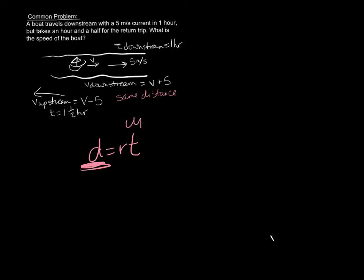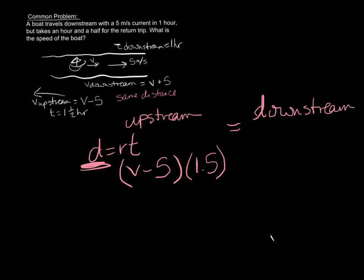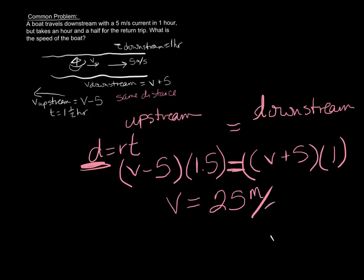So upstream, our rate was V minus 5, and our time was 1.5 hours. And that's going to equal our downstream distance. And our rate was V plus 5 times the one hour. And those guys are going to be equal to each other. So we solved the equation, and we should get that the velocity is equal to 25 meters per second, if I remember my answer correctly.